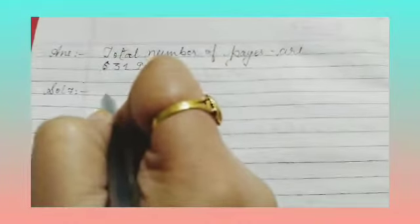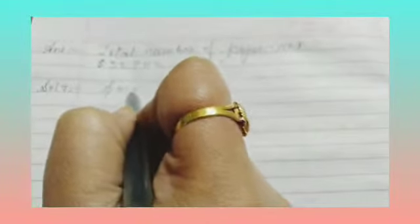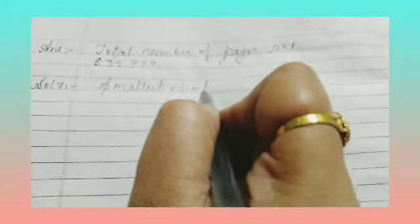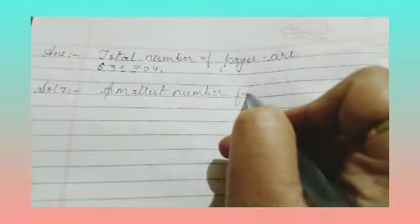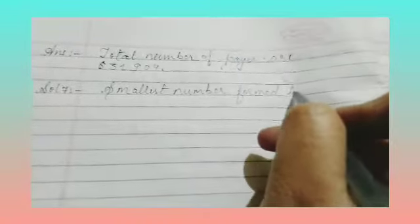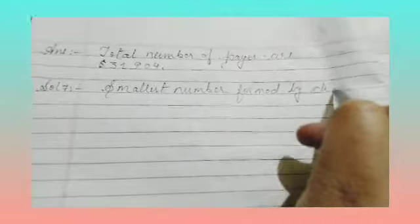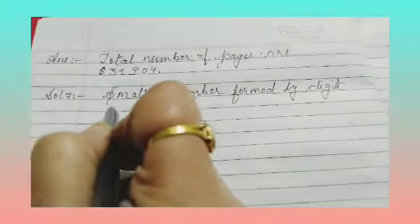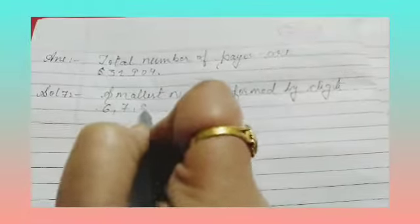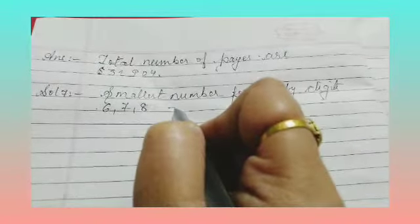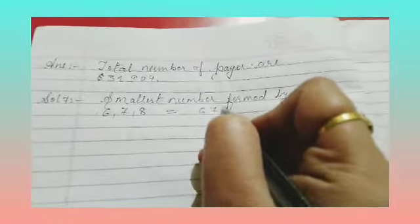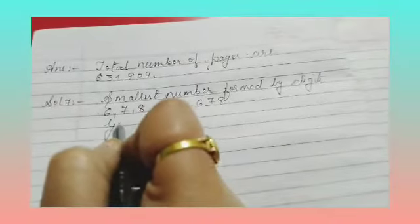Children, smallest number formed by digits 6, 7, 8 equals to smallest number 678. Okay. Now, greatest number.